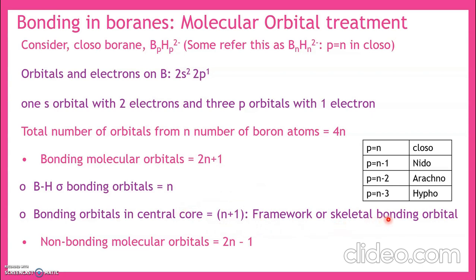The framework or skeletal bonding orbitals number n+1. For a closo cluster, n equals p. For nido, n equals p+1. For arachno, n equals p+2. For hypho, n equals p+3. Here, n always refers to the number of corners or vertices in the parent polyhedron, which is of closo type.